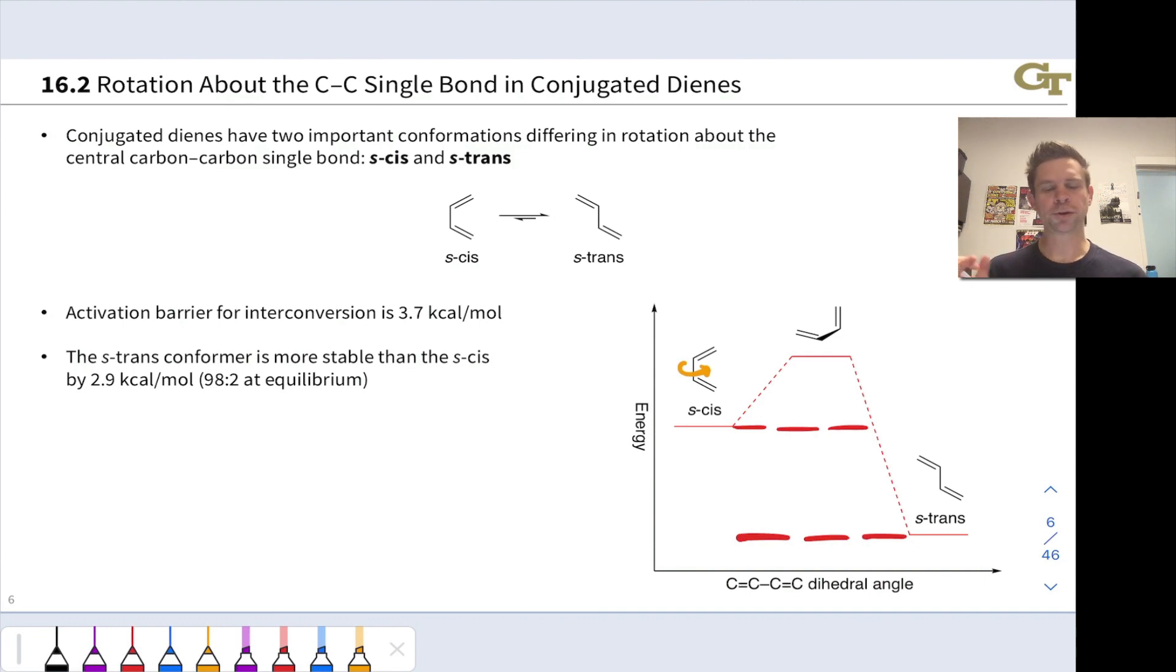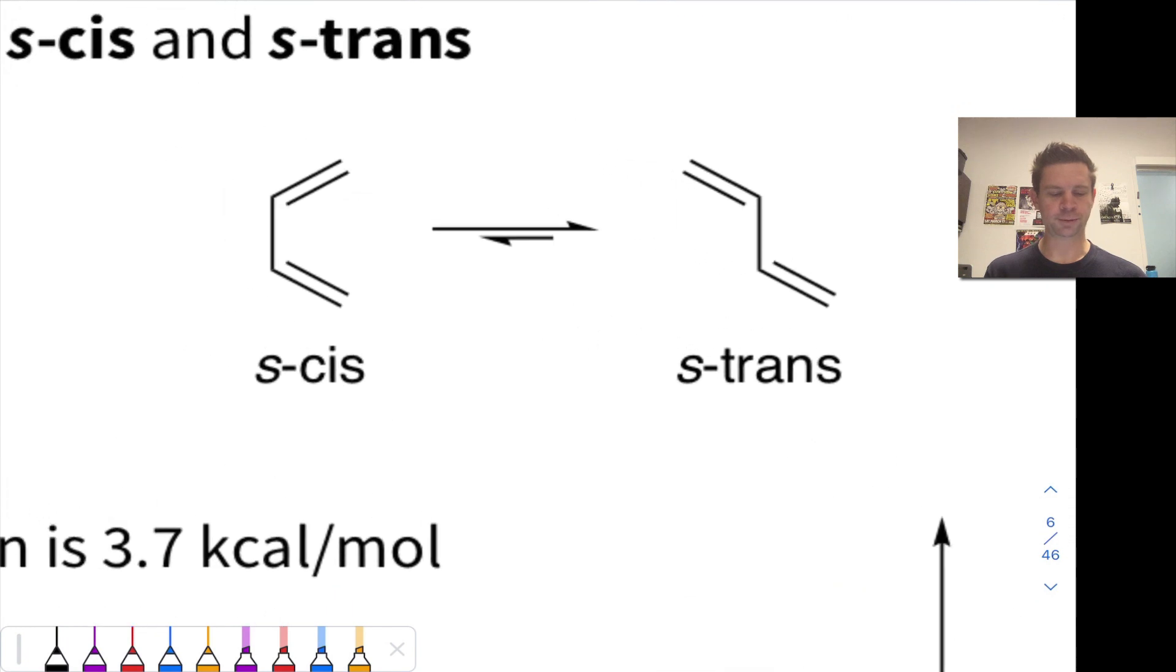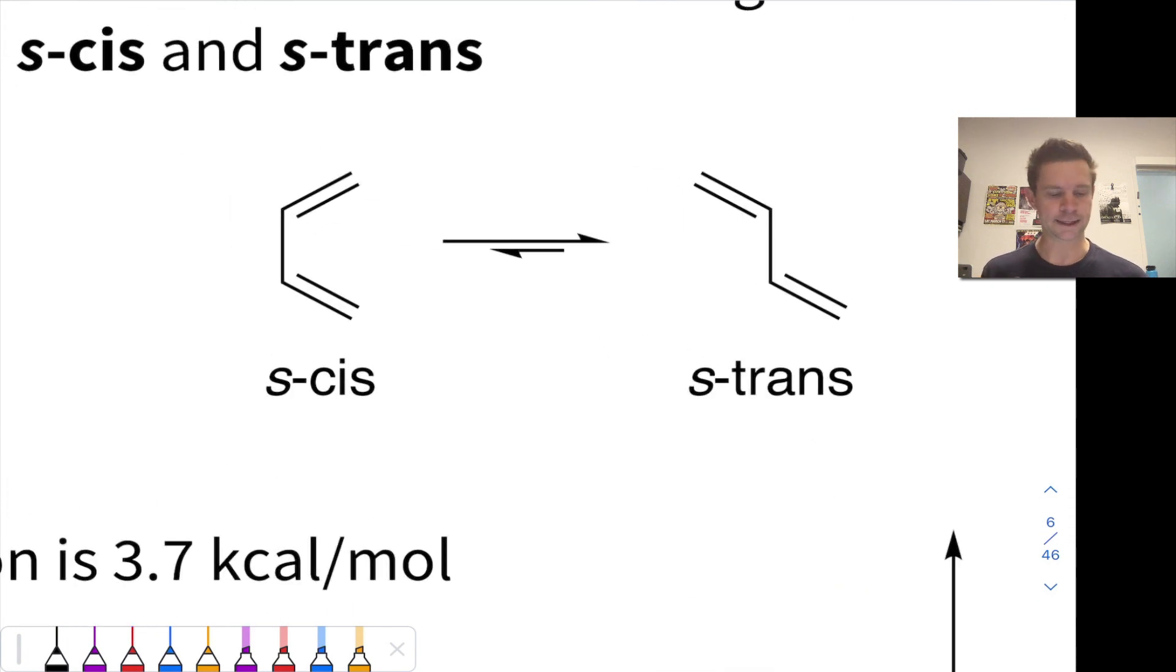In particular, if we look at 1,3-butadiene, which is a prototypical conjugated diene, it's got two conformations called S-cis and S-trans that differ in rotation about the central single bond, the C2-C3 bond.